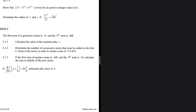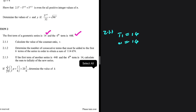The first term of a geometric series is 14 and the sixth term is 448. The first question, 2.1.1, is to calculate the value of the constant ratio R. Let's dissect our information. The first term, T1, is equal to 14, which is just A. So A equals 14.